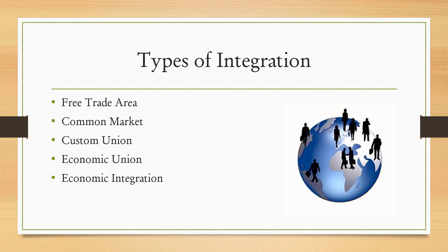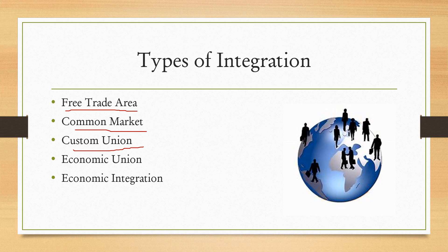The next topic is types of integration. First is free trade area, which includes free trade between two countries and abolishes all restrictions on trade. Then common market, which allows free movement of labor and capital within the common market. Customs union eliminates all restrictions on trade and adopts a uniform commercial policy.